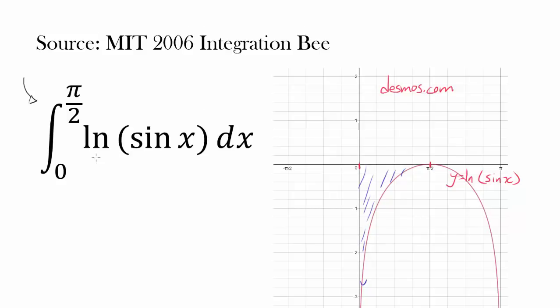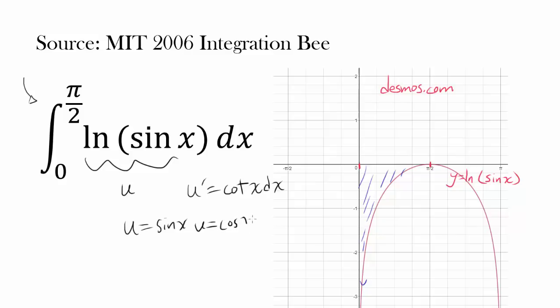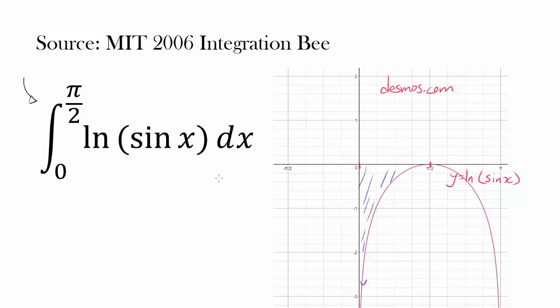When I first saw this integral, I realized if you let u be natural log of sin x then u' is cotangent of x dx, or if you let u be sin x then du is cosine x dx. I tried to use some properties of natural log or u-substitution to work with this integral, but it really didn't work out. I highly encourage you to try it — even if you don't get the answer, messing around with integrals and substitution will only improve your ability to manipulate and deepen your understanding.